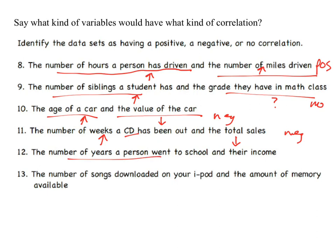Number of years person went to school and their income. Generally, generally the more years people go to school, the higher their income because they have more expertise. So that'd be a positive correlation. Number of songs downloaded on your iPod. Oh, I love how dated this is. And the amount of memory available. I don't know if you guys ever had like download a lot of things before, but usually the amount you download leaves you with less memory. So this would be a negative correlation.